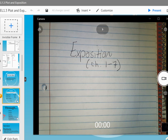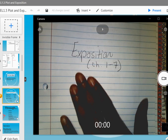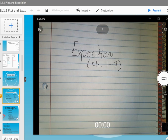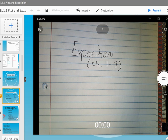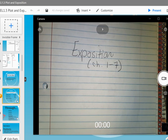The first thing you're going to do, which you should already have done, the last journal entry we had in here was independence. So you want to skip 18 pages, and on the 19th page, you want to write exposition chapters one through seven.